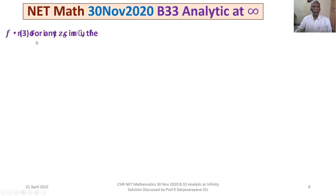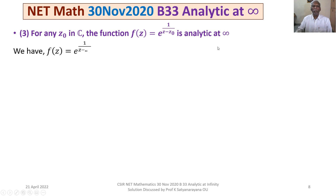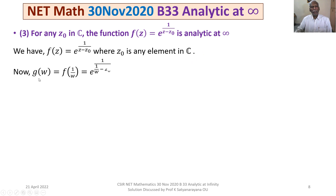We continue for the third option. The statement given in option 3 is: for any z₀ in C, the function f(z) = e^(1/(z−z₀)) is analytic at infinity. We write down g(w) = f(1/w), substituting 1/w for z, and on simplification that gives g(w) = e^(w/(1−wz₀)).